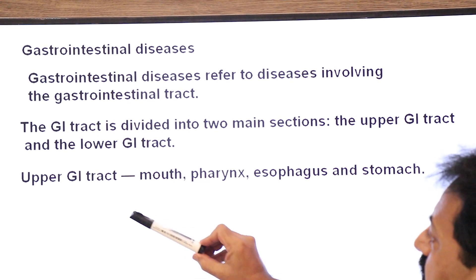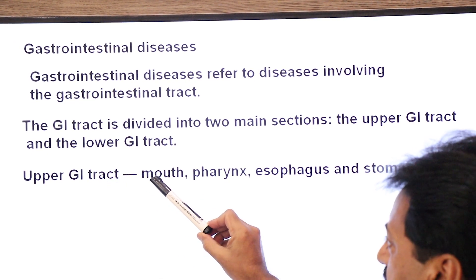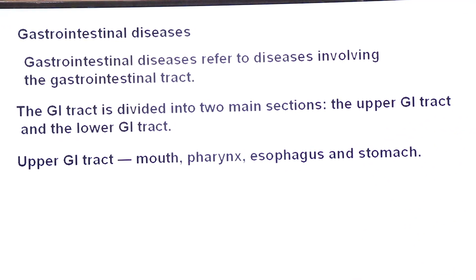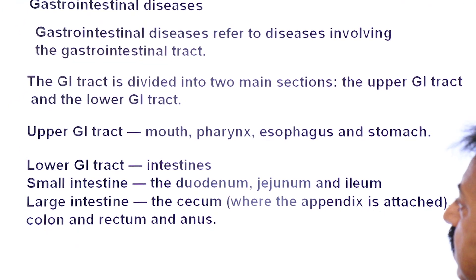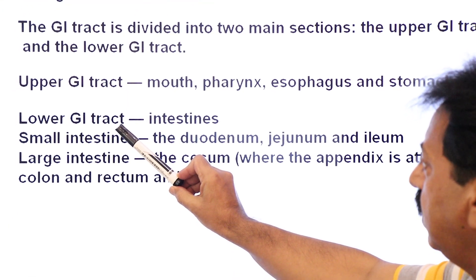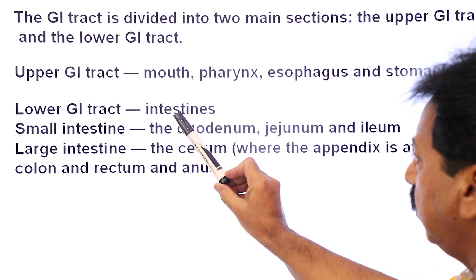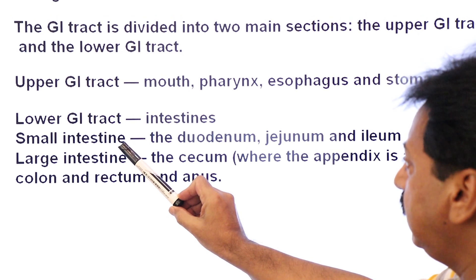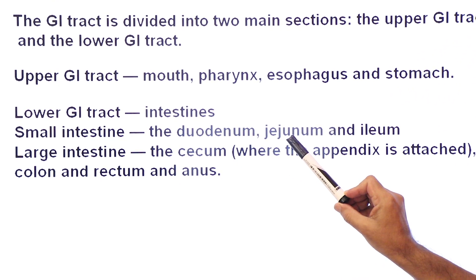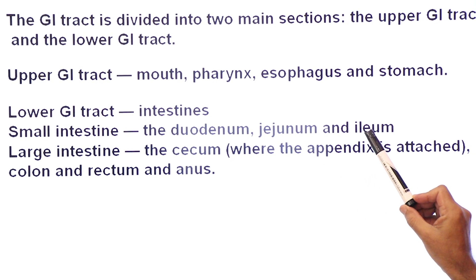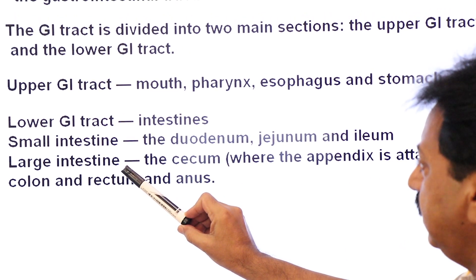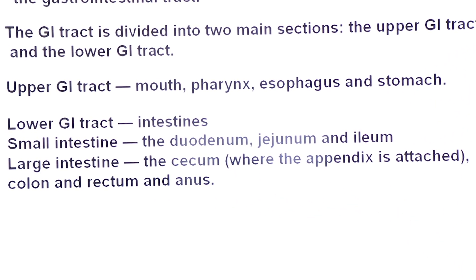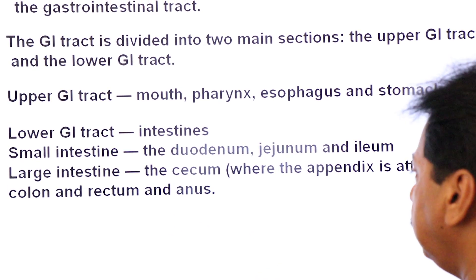The upper gastrointestinal tract comprises the mouth, pharynx, esophagus and stomach. The lower gastrointestinal tract includes the intestine — both small intestine and large intestine. The small intestine includes duodenum, jejunum and ileum. The large intestine has the cecum (where the appendix is attached), colon, rectum and anus.